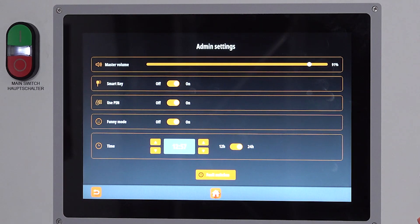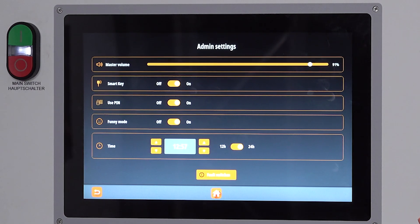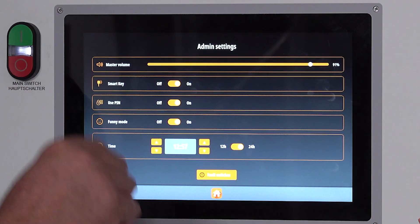Under the administration settings, we've got a master volume to turn the sound down. We can deactivate the smart key if you lose the smart key.